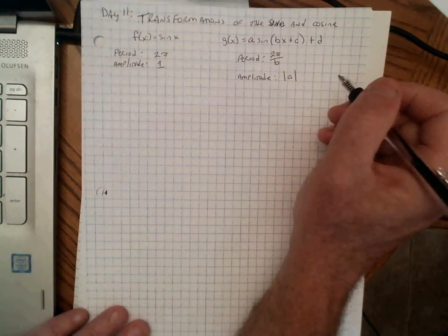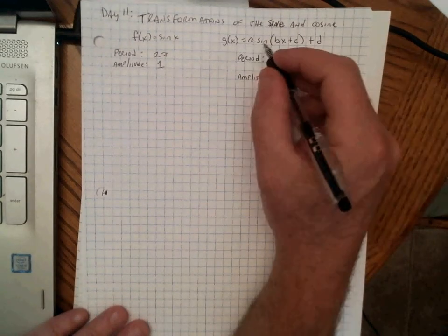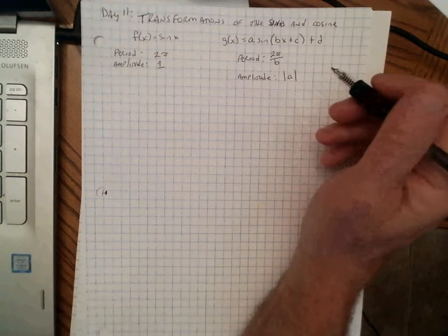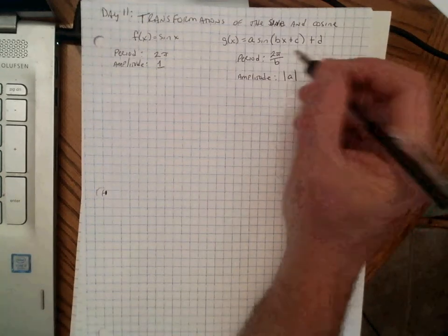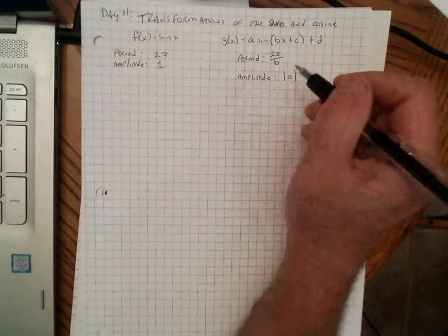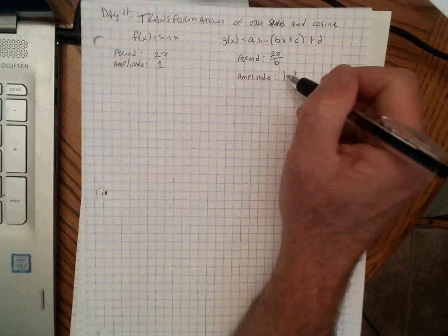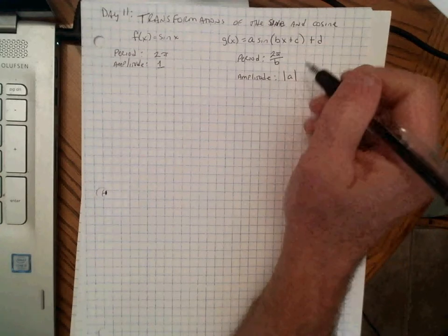The amplitude is going to be the absolute value of a. If a is negative, it reflects the sine curve across the x-axis. If a is positive, the amplitude is just a.